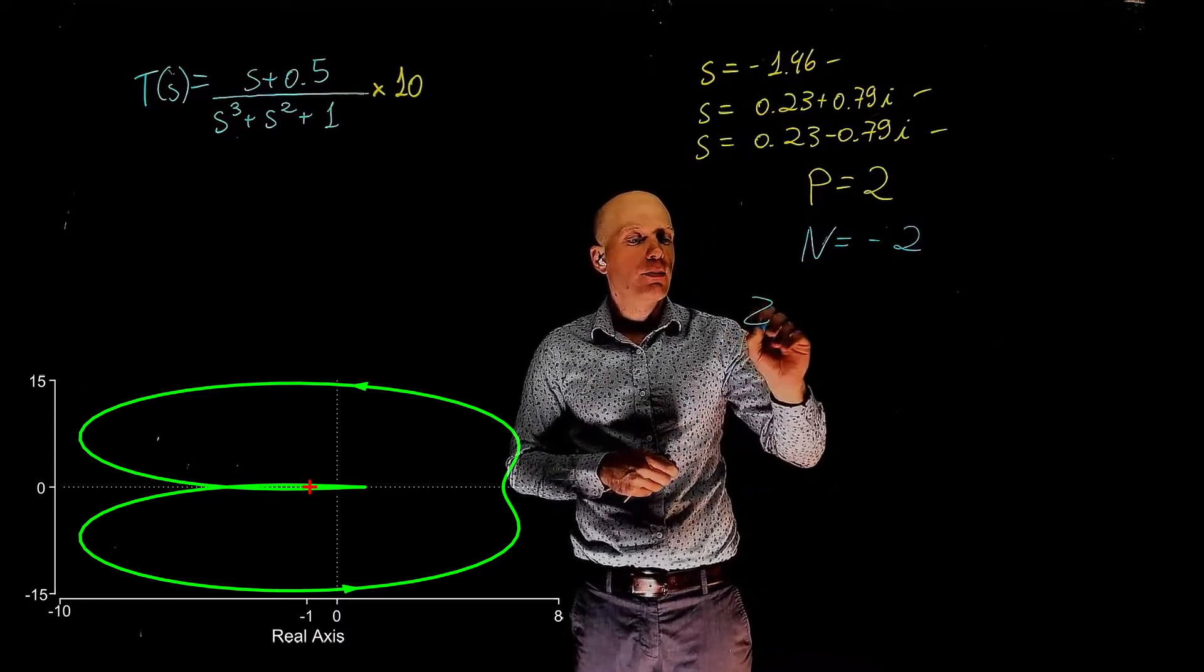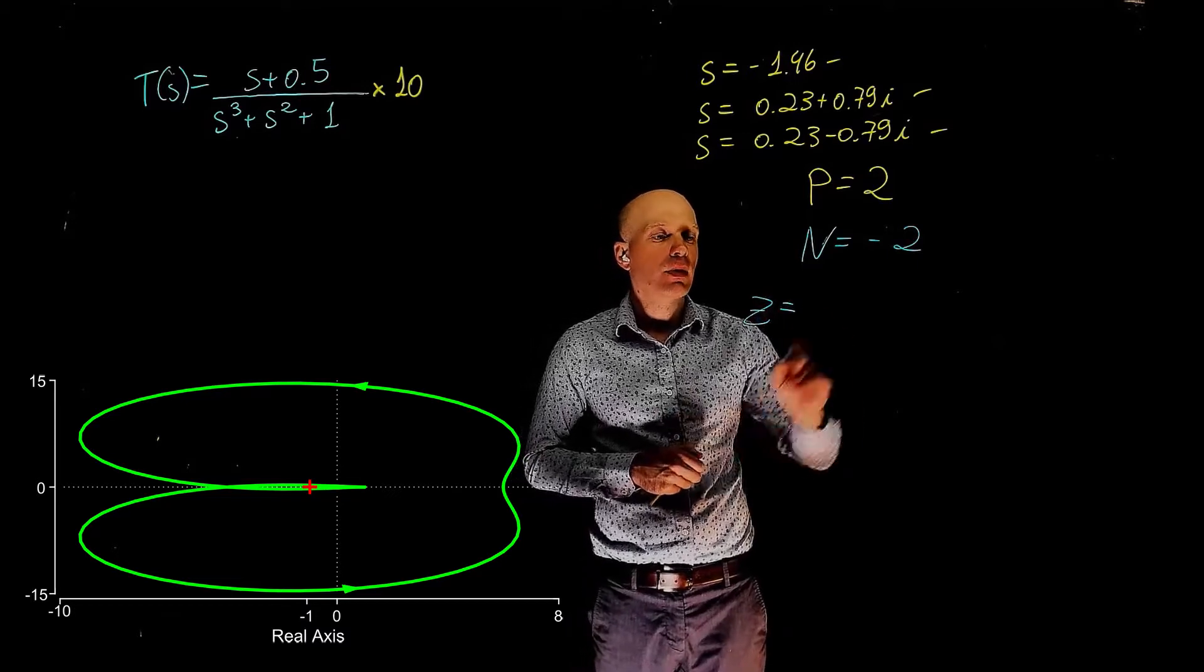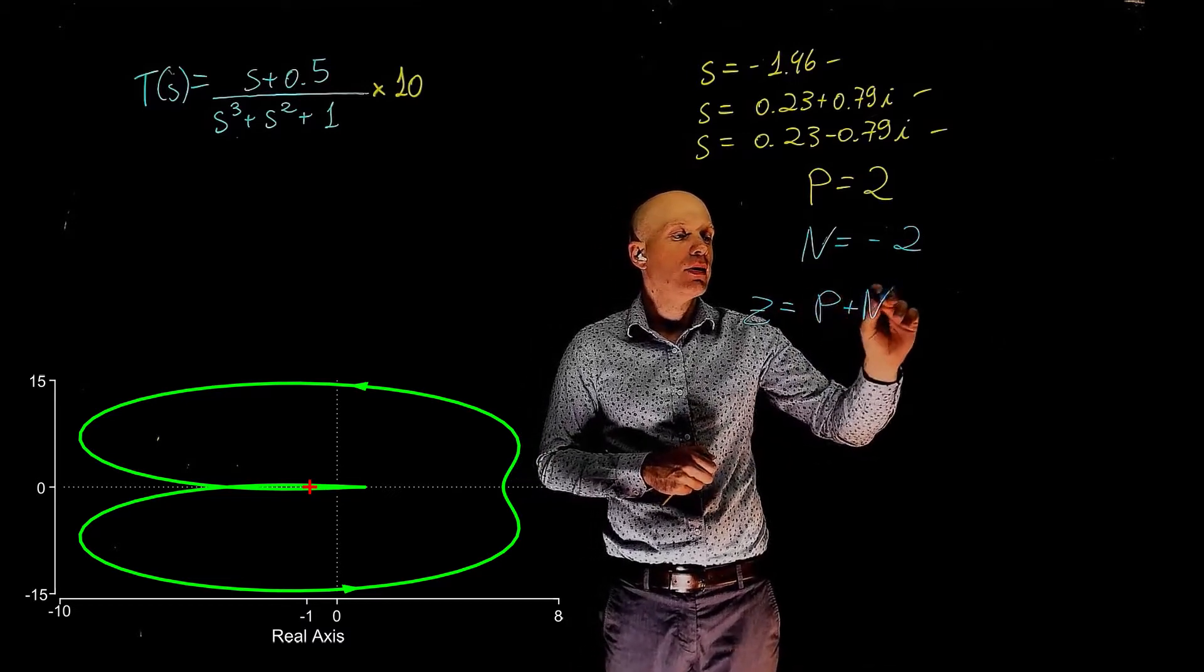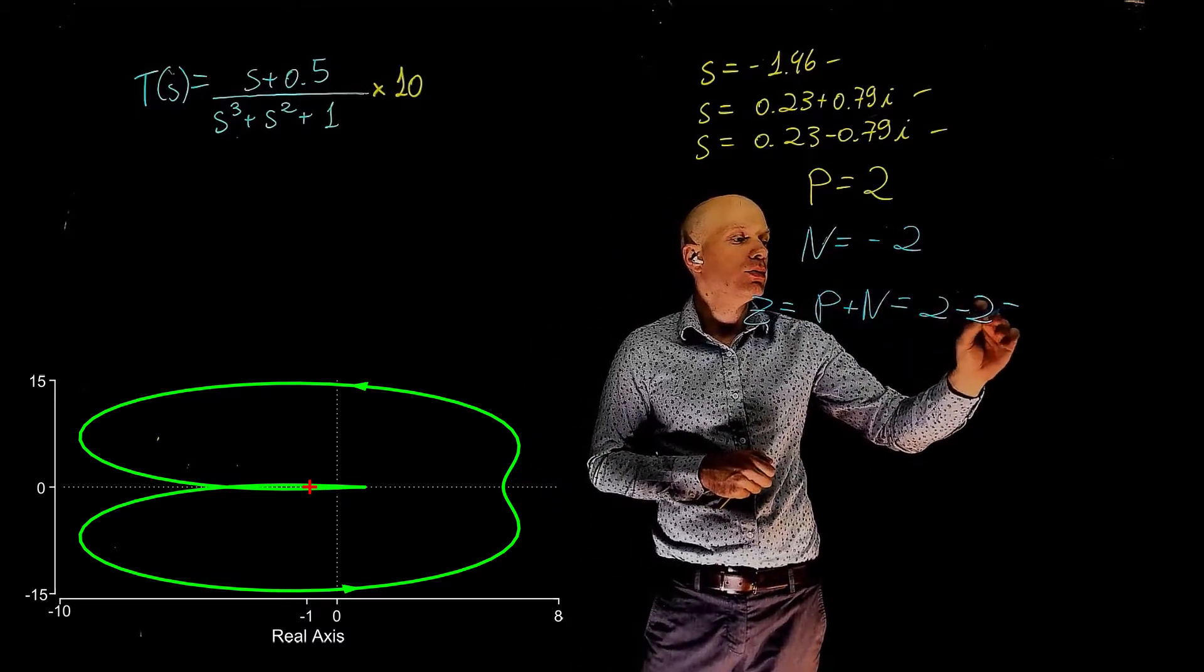Now, the number of unstable poles of the closed loop system is P plus N, that is 2 minus 2, which equals 0.